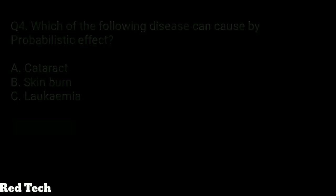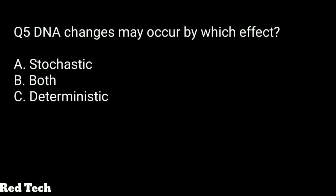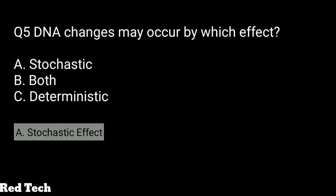Question number five: DNA changes occur by which effect? Options: stochastic, deterministic, or both. The right answer is stochastic effect — changes in DNA studies can occur due to stochastic effect. These are possibilities that certain diseases may result from this effect.